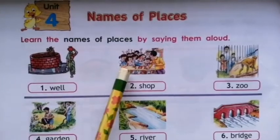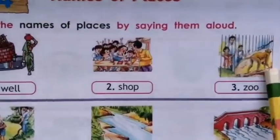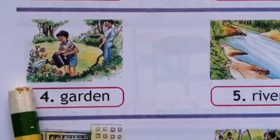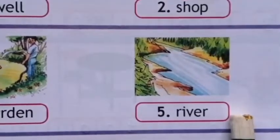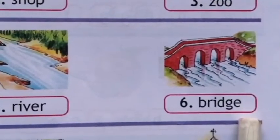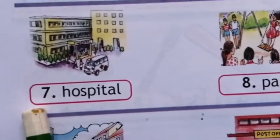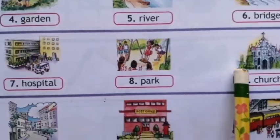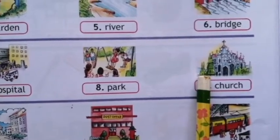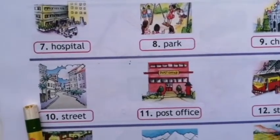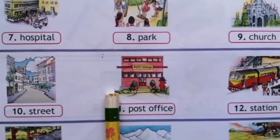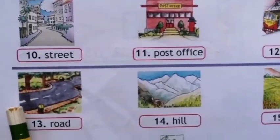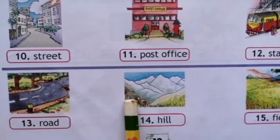Well, shop, zoo, garden, river, bridge. Hospital, park, church, street, post office, road, field.